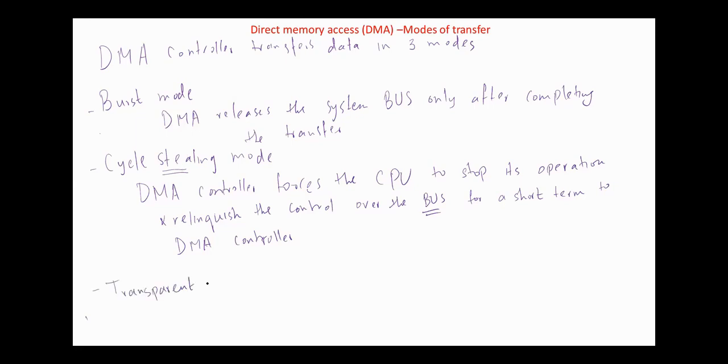The third mode is transparent mode. In this mode, the DMA controller takes charge of the system bus only if the processor does not require the system bus.